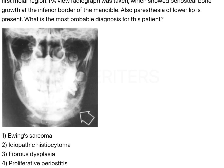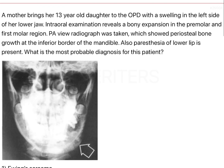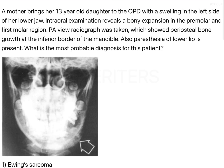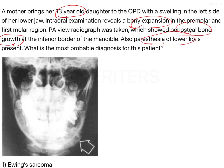Let's look at the key points. Number one: the patient is a 13-year-old, meaning the patient is young. Number two: bony expansion in the premolar region. Number three: periosteal bone growth. Number four: paresthesia of the lower lip.